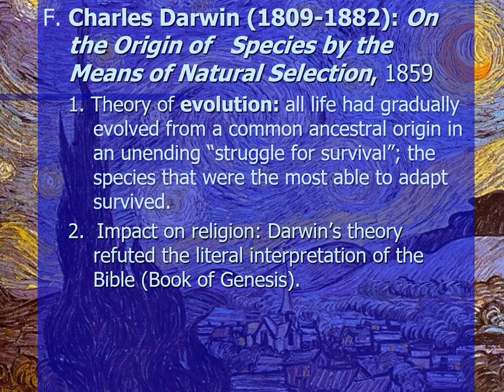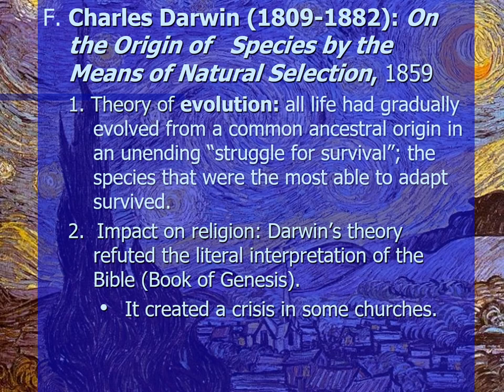Darwin believed he could prove his ideas about the evolution of species through fossil evidence. For example, fossil evidence showed that giraffes did not always have necks as long as they do now — the long-necked giraffes survived because as trees grew taller, only they could reach the leaves, while shorter-necked ones died off, passing the long-neck gene to offspring. Darwin's ideas about nature created a crisis in some churches, and Thomas Huxley was one of Darwin's biggest supporters.